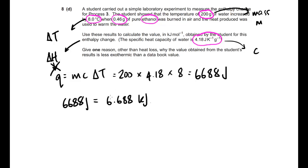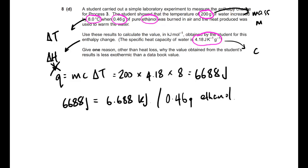So I have 6.688 kilojoules, but the problem is I know this is kilojoules per 0.46 grams of ethanol — that's what was burned. And 0.46 grams is not a mole of ethanol. So let's look at ethanol and convert this to moles to see how many moles that actually is.